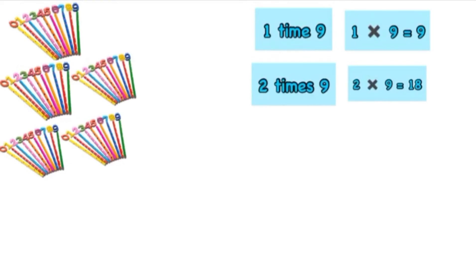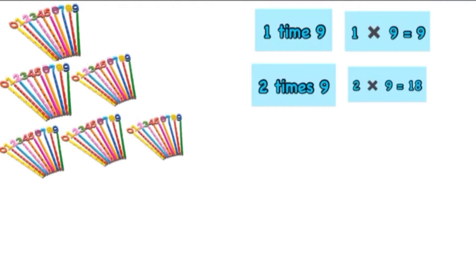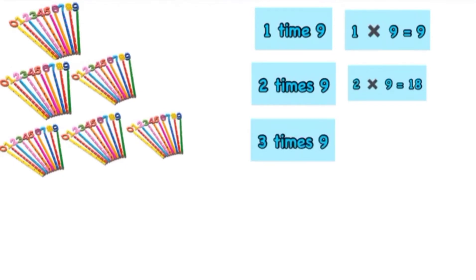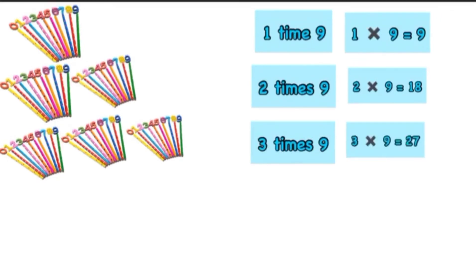In the next step, in two sets of pencils, when we add one more set of nine pencils, it will become three sets of nine pencils. So we can read it as three times nine and write it as three multiplied by nine, and it is equal to 27.